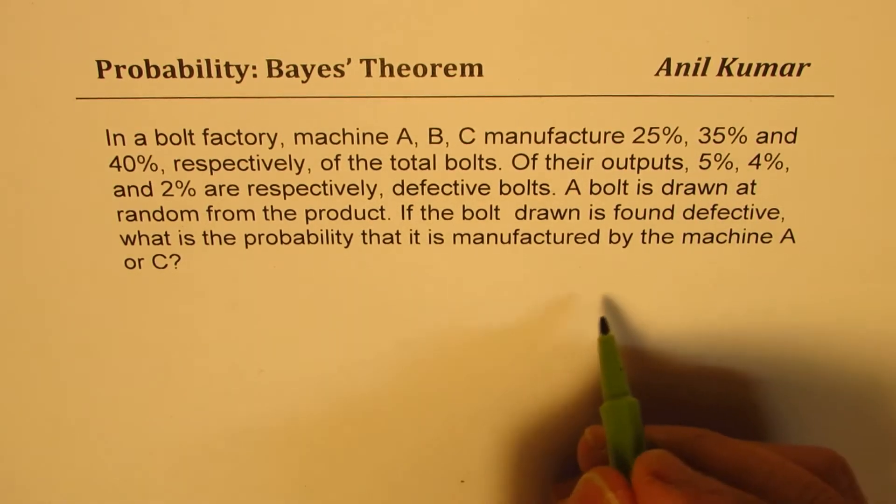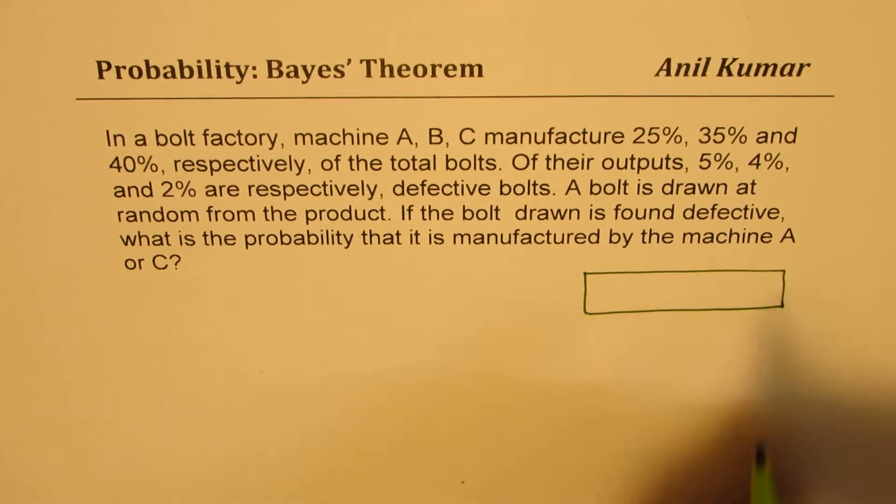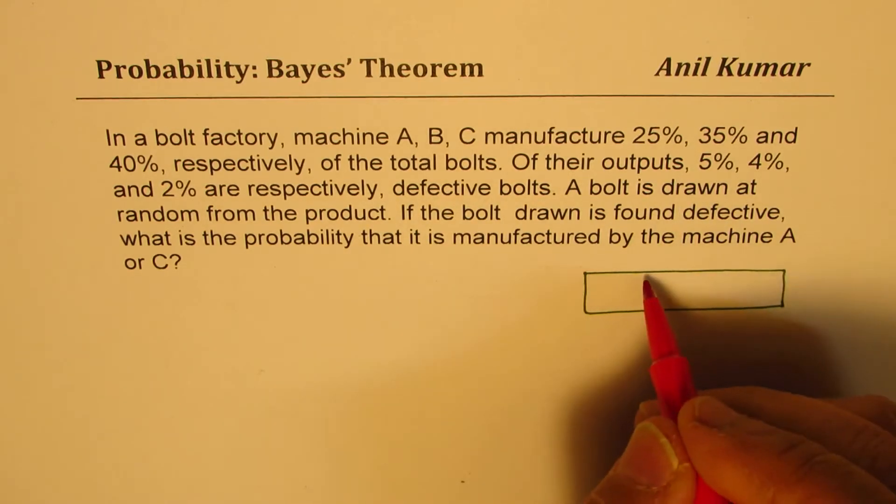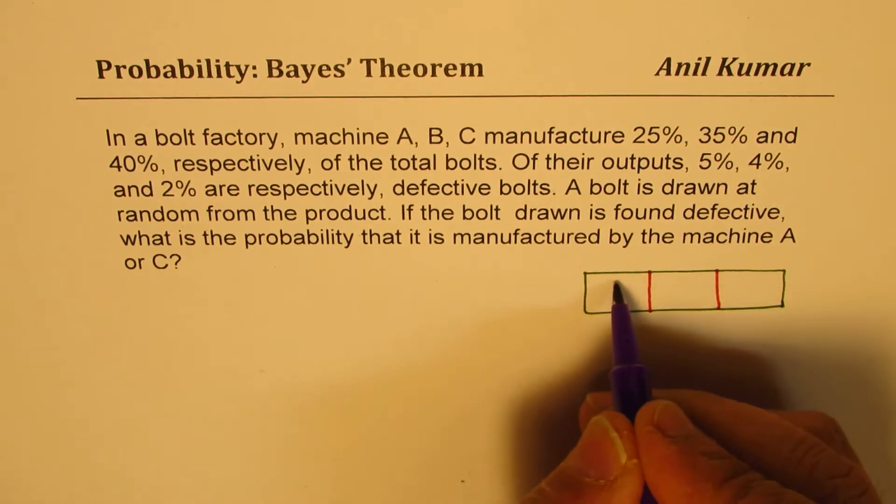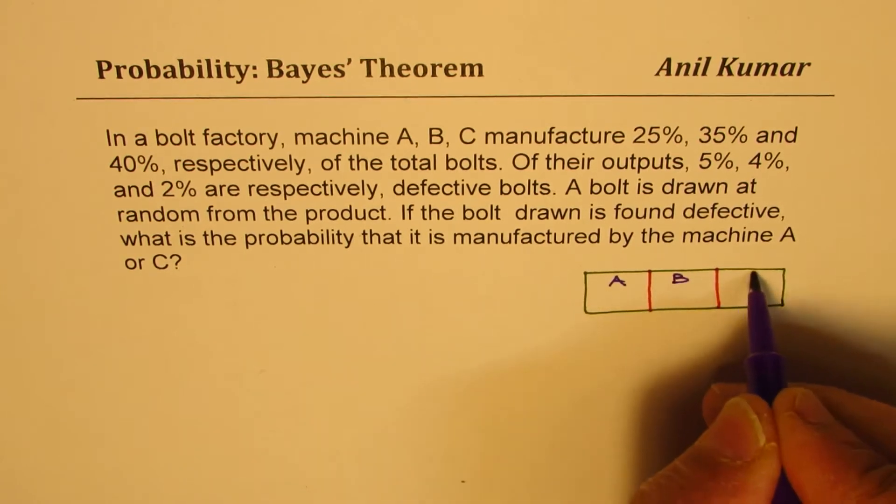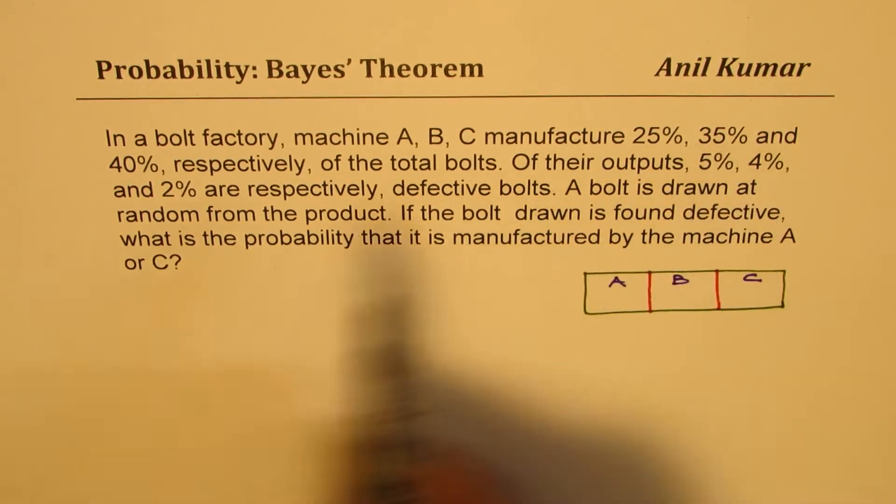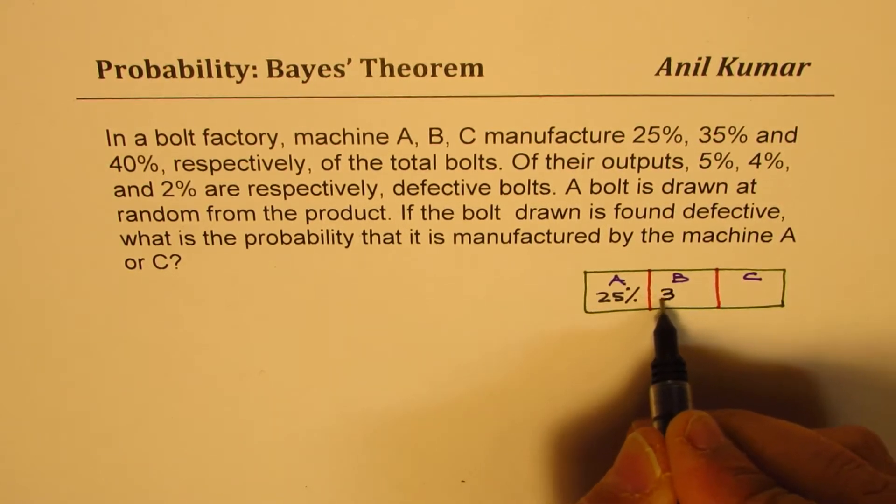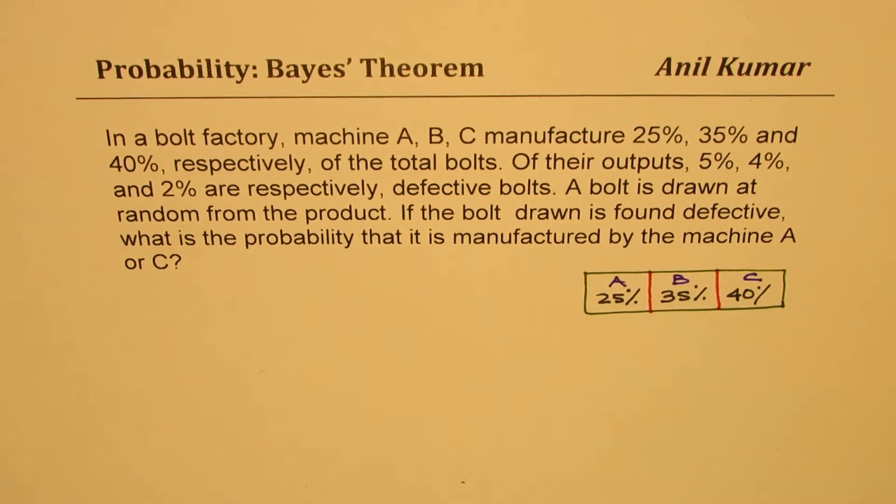What you notice here is that we are given a sample space where the bolts are being manufactured in one of three units. These are the units which are labeled as A, B, and C. As far as the production is concerned, this is 25% of the whole production, this one is 35%, and the last one, C, gives you 40%. That makes it all 100% bolts. So in our sample space, everything is coming from these three units.